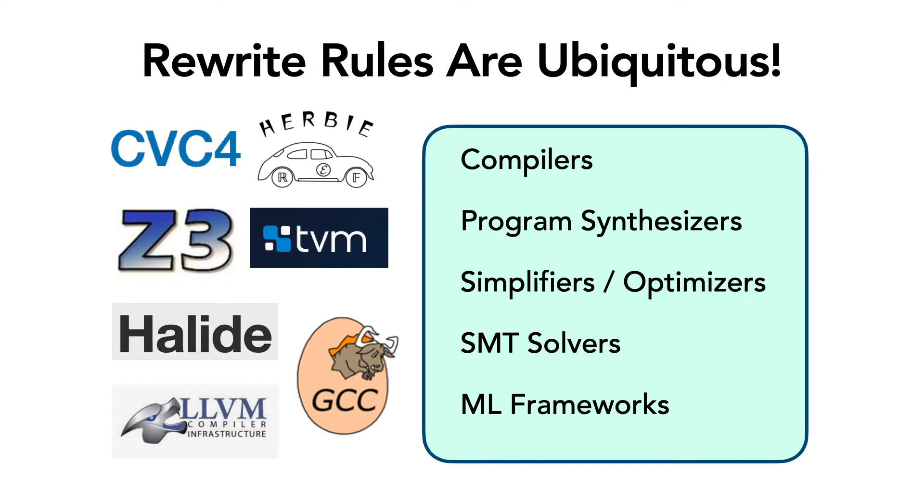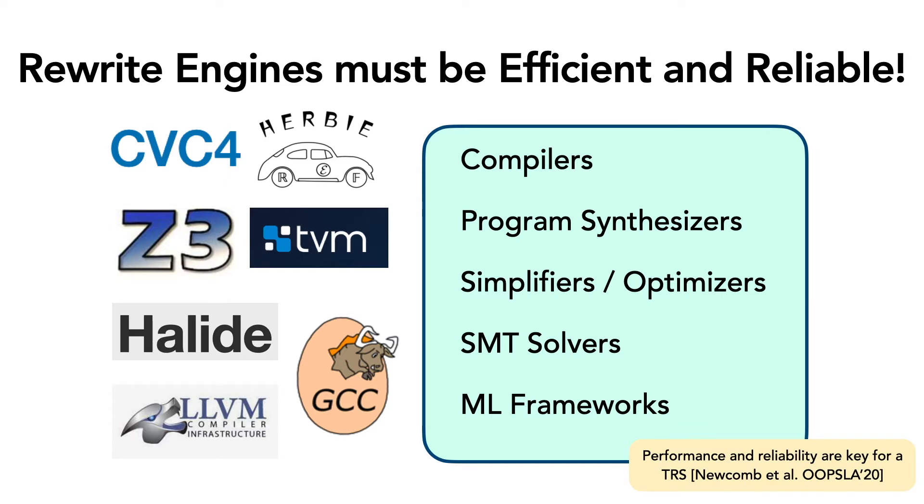Rewrite rules are used in a lot of important software, from compilers to SMT solvers and even machine learning frameworks. They are a common way for performing various optimizations and simplifications over programs. Since rewrite rules are so widely used, a lot of work has focused on developing robust and reliable rewrite engines that can efficiently apply these rules.